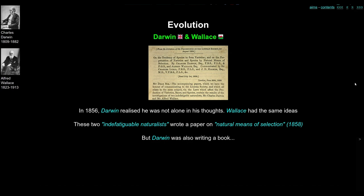In 1858, they wrote a paper together, calling themselves 'Two Indefatigable Naturalists', about the natural means of selection. Darwin's book was published a year later in 1859 — a masterpiece, a massive collection of facts, beautifully written. If you only ever read one book to do with this course, Darwin's Origin of Species would be a good one.